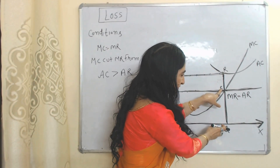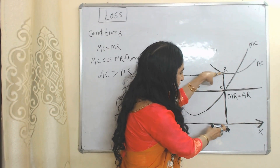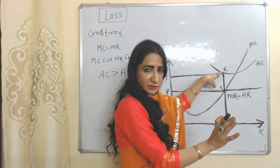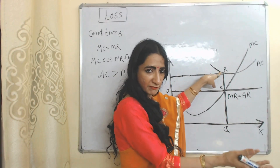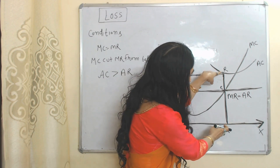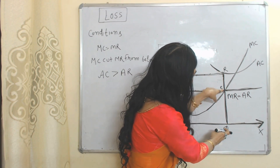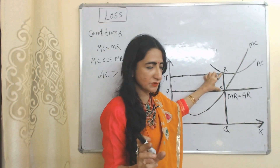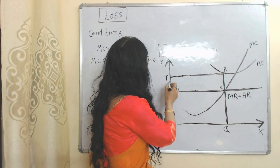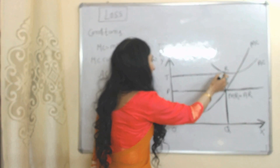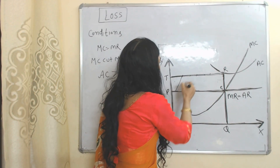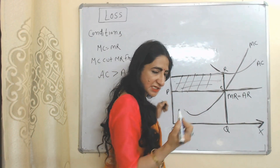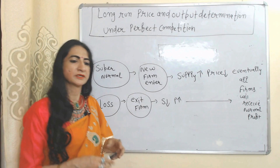EQ is average revenue but average cost is RQ. RQ is more than EQ, that means average cost is more than average revenue. The difference between RQ and EQ — RE — will be called per unit loss, and this whole area PTRE will be called total loss which perfect competition receives during the short time period.